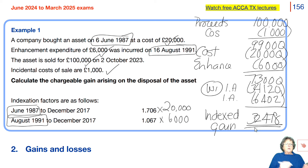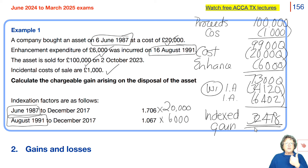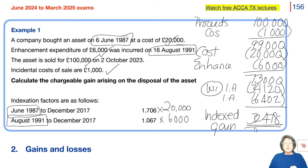There is no annual exempt amount for companies. If you are doing a capital gains computation in Section B or Section C, get it fixed in your head: am I doing this for an individual — in which case I get the annual exempt amount but not indexation — or am I doing it for a company, where I get indexation allowance but not the annual exempt amount? Very, very important.